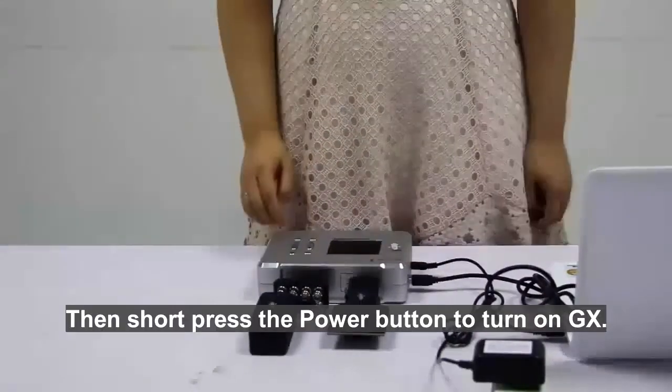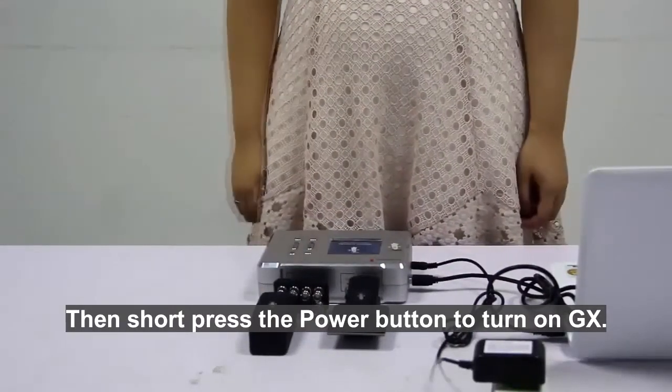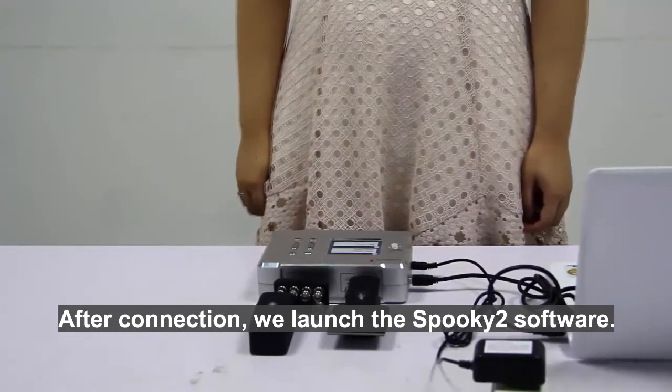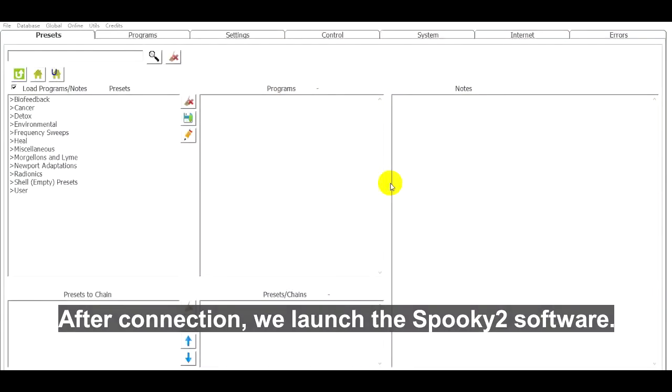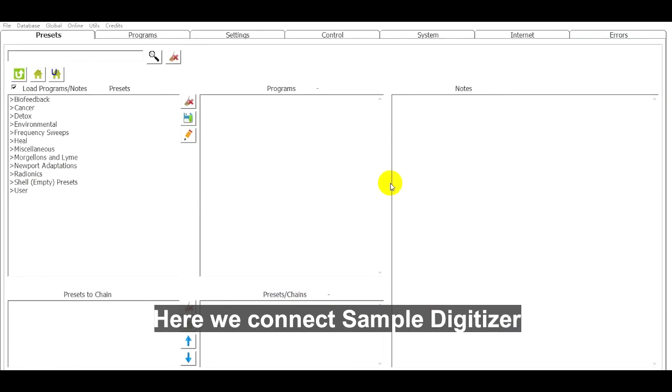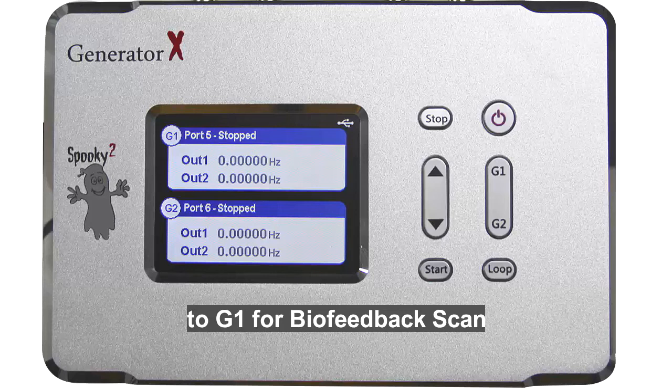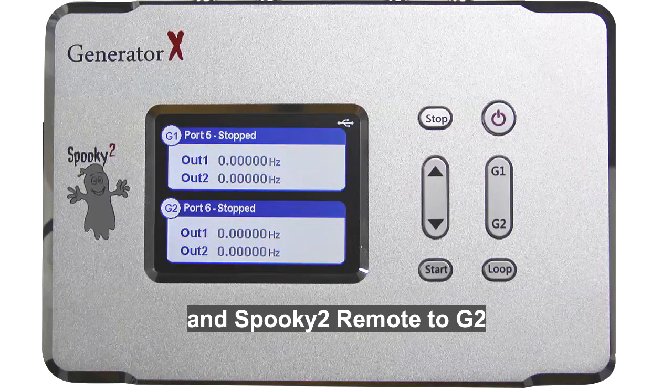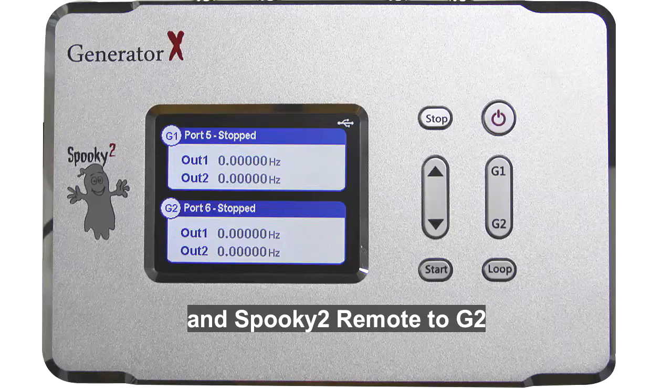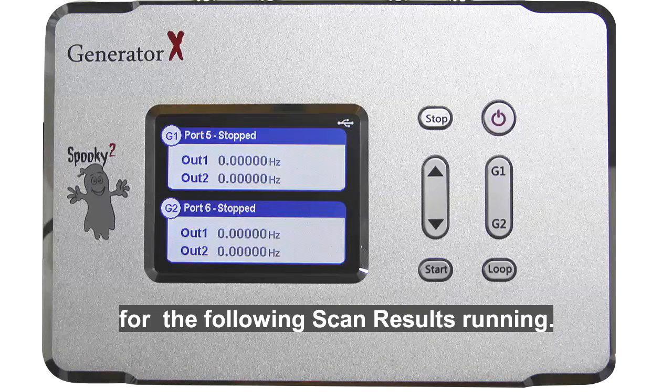Then short press the power button to turn on GX. After connection, we launch the Spooky2 software. Here we connect sample digitizer to G1 for biofeedback scan and Spooky2 Remote to G2 for the following scan results running.